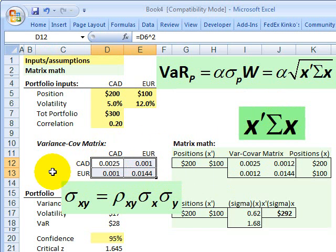And so this is really the key element in a lot of this parametric or delta normal based value at risk. You can see, we've got the variance of the Canadian dollar, the variance of the euro, and then the covariance between the two.